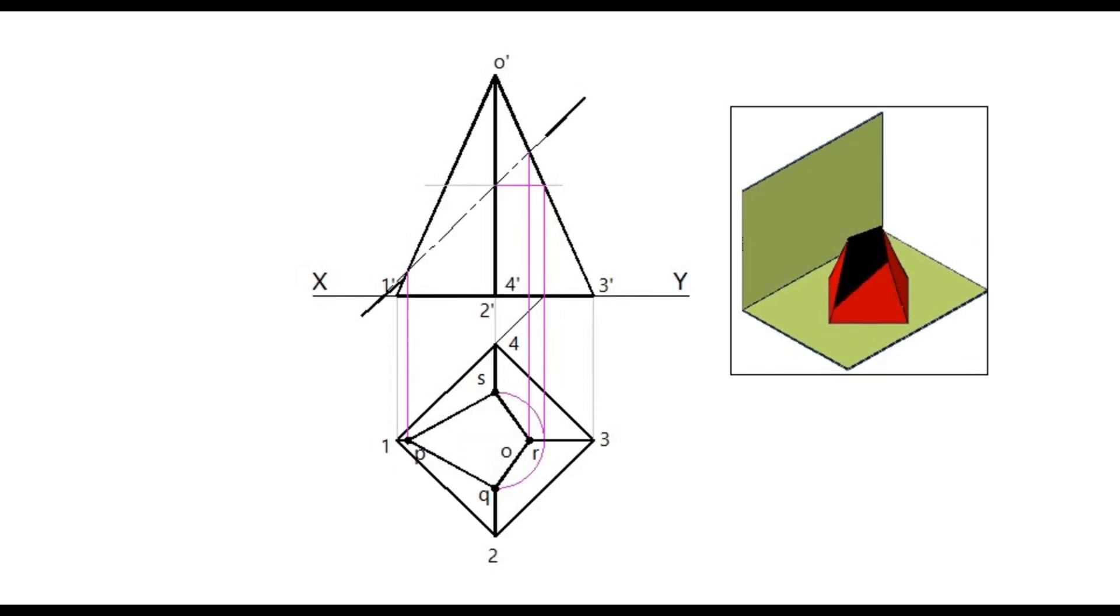Join these points. The slant edges within the sectional area will no longer exist.